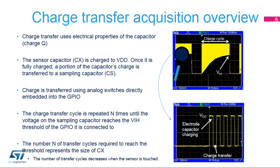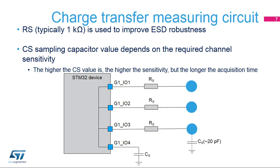The charge transfer acquisition technique works using the electrical properties of the capacitor. It consists of charging the sensor capacitor, or CX, to VDD. Once fully charged, a portion of the accumulated charge is transferred into a sampling capacitor, or CS. The number of charges transferred depends on the factor CX divided by CS. The charge transfer cycle is repeated N times until the voltage on the sampling capacitor reaches the threshold VIH. The number N represents the size of CX. When there is a touch, the sensor capacitance increases, so more charge is transferred, leading to a decrease in the number of charge transfer cycles.